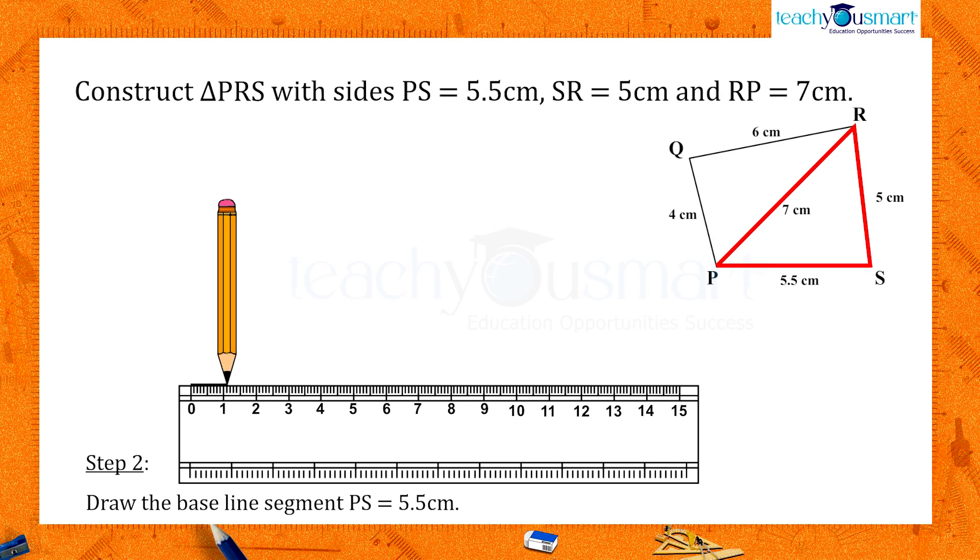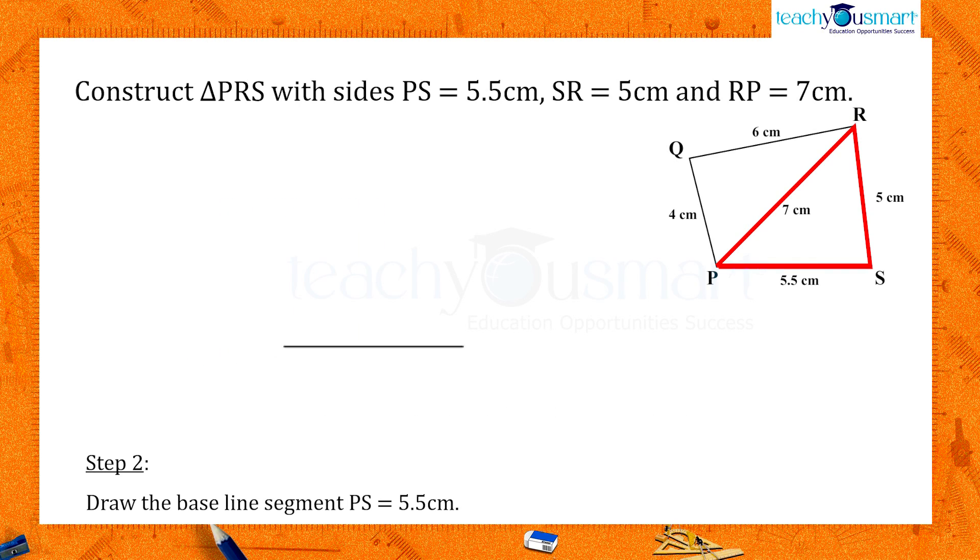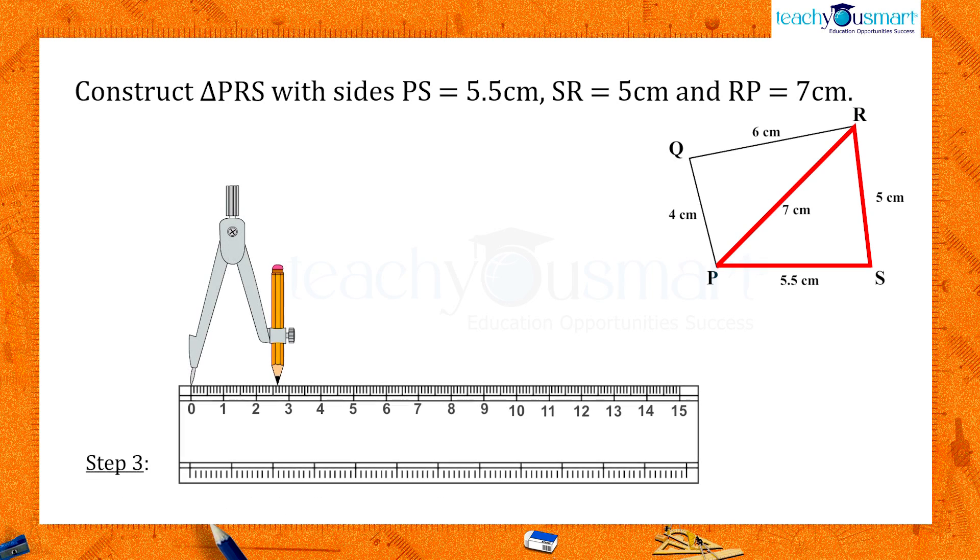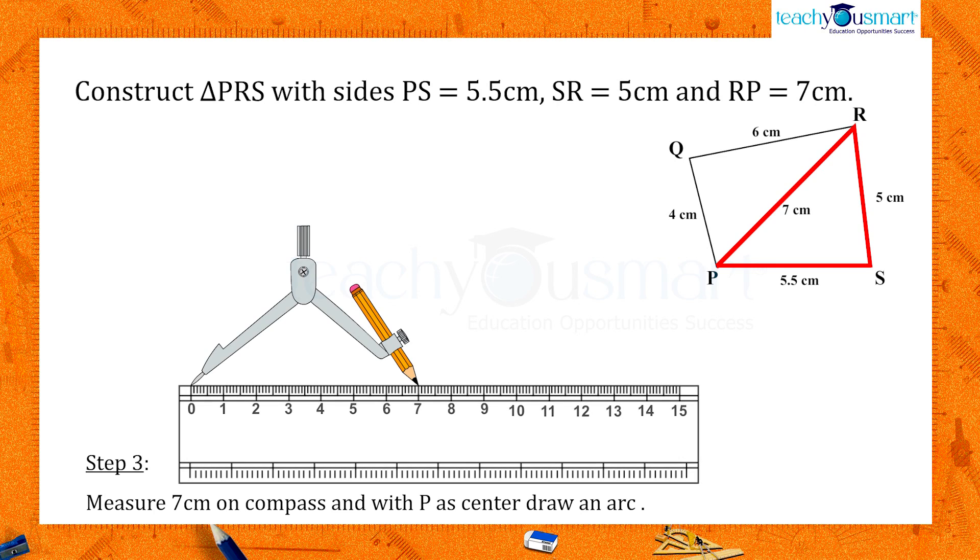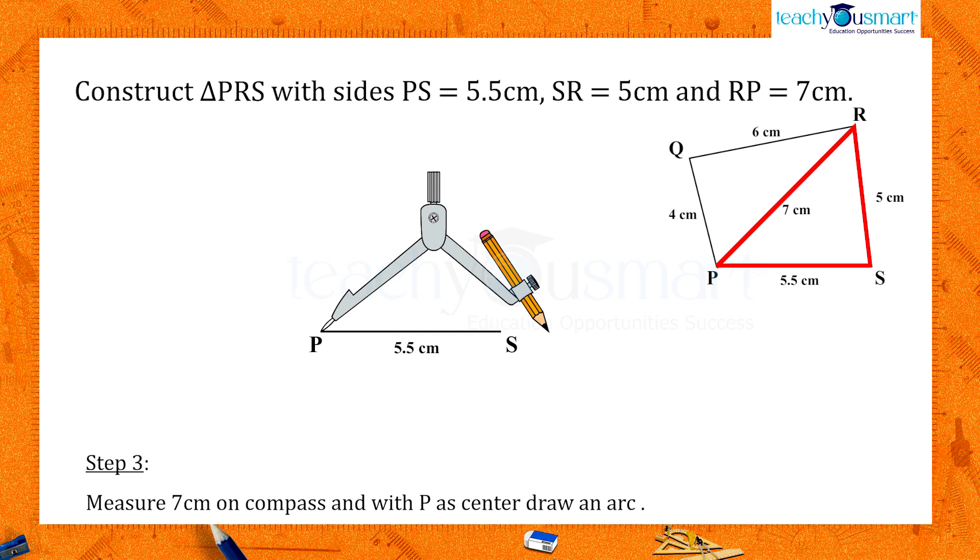First, draw the baseline segment PS of length 5.5 centimeters. Now R is 7 centimeters away from P, so measure 7 centimeters on the compass and draw an arc with P as the center.